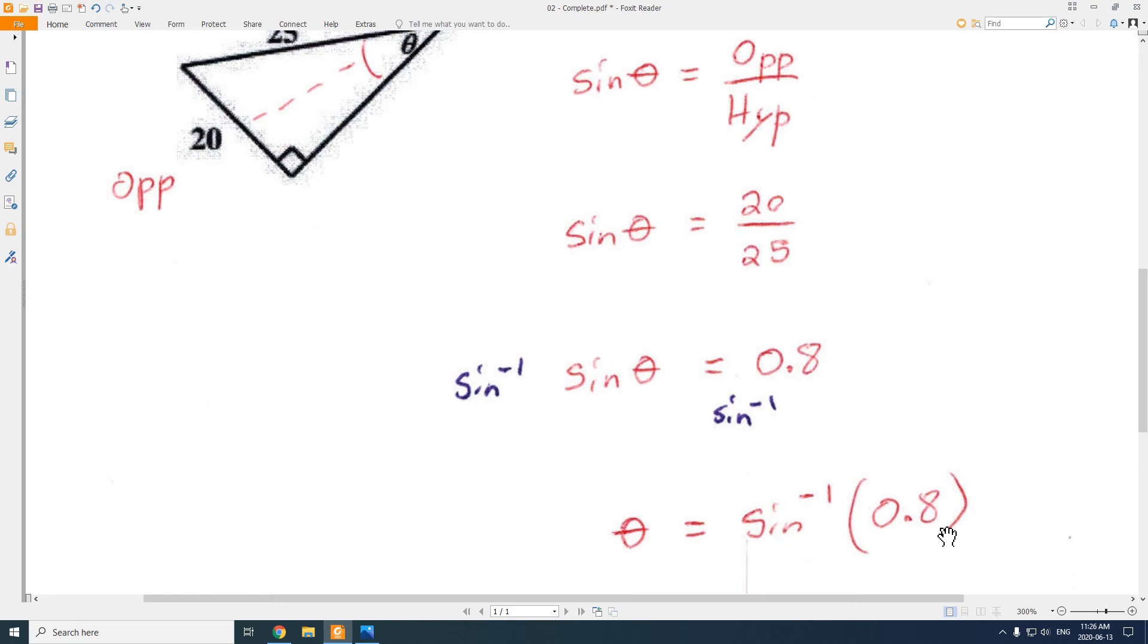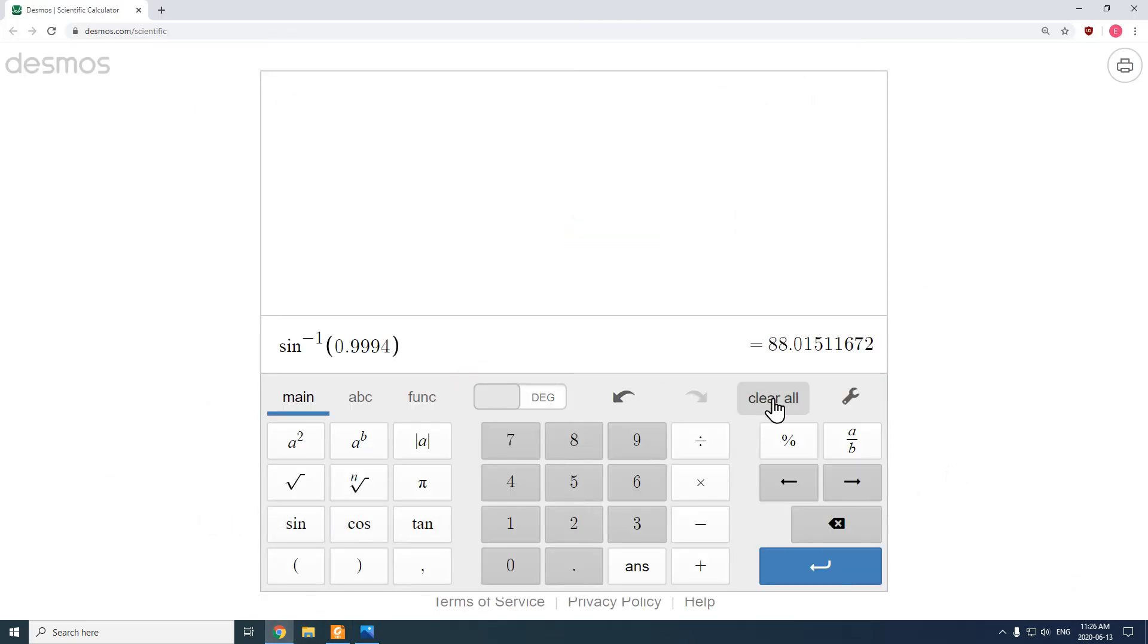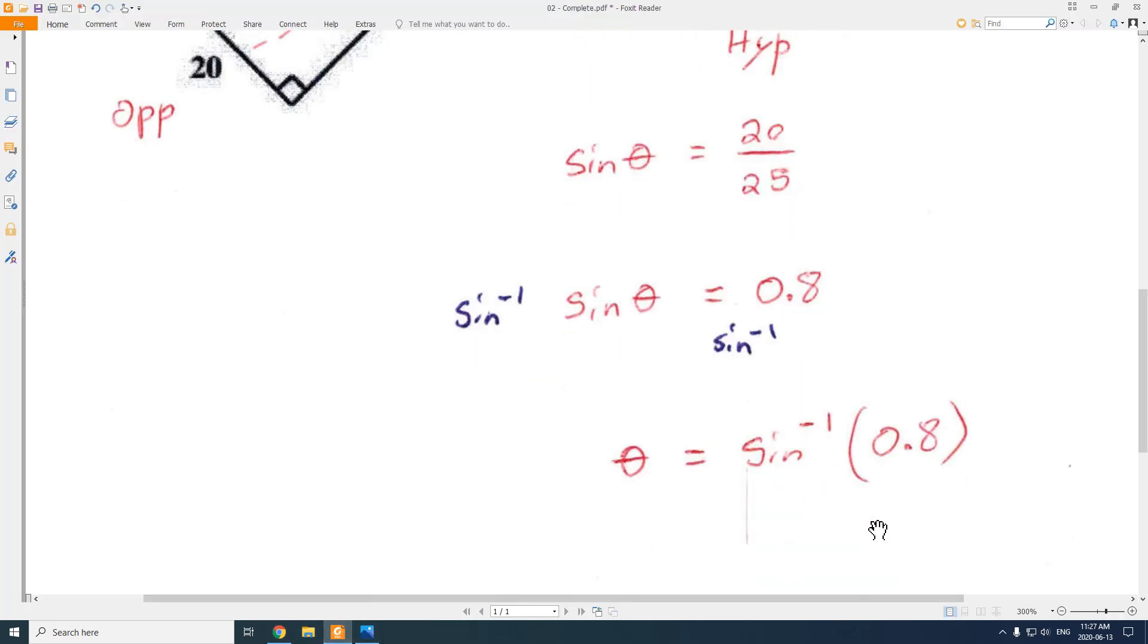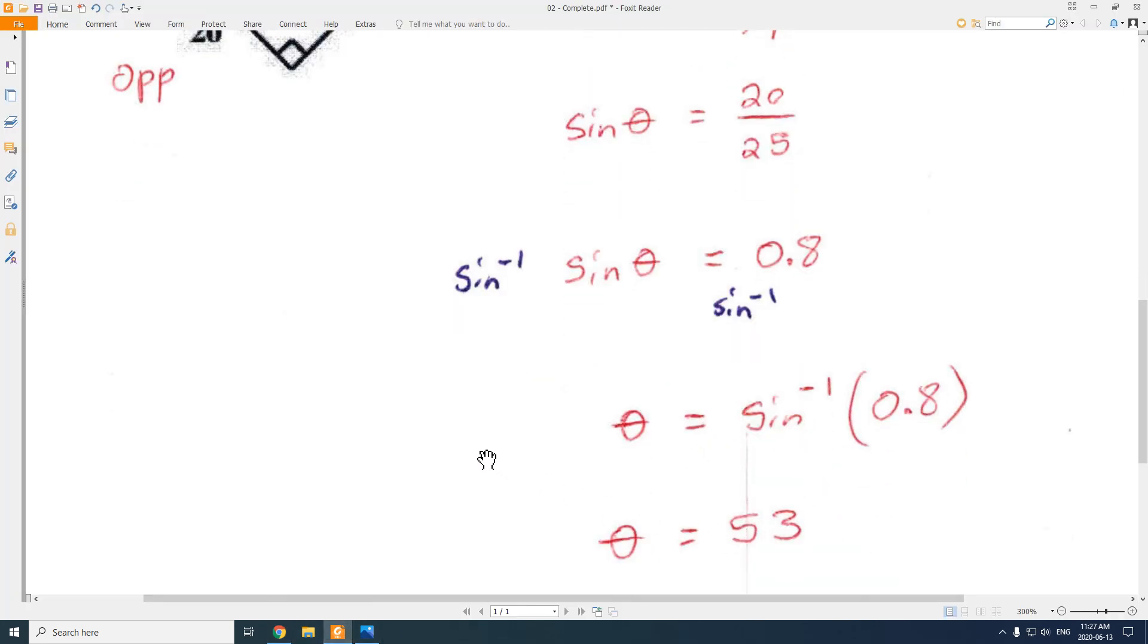I have theta equals the inverse sine of 0.8. Or in other words, what angle gives you a ratio of 0.8? So we go to our calculators, we plug that in. The inverse sine of 0.8. So second sine to get that inverse sine. Inverse sine of 0.8 gives me 53.1 degrees. So that angle was 53.1 degrees. And I just round it to 53.